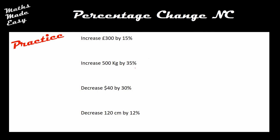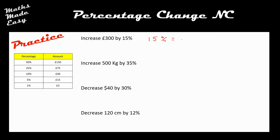For the first one, I've worked out my key percentages in the background. 15% of £300 is £45, and because this says increase I'm going to add it on, so the total is £345.